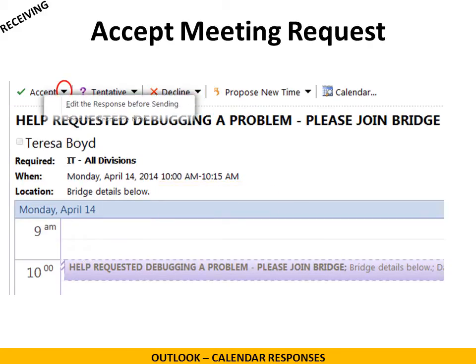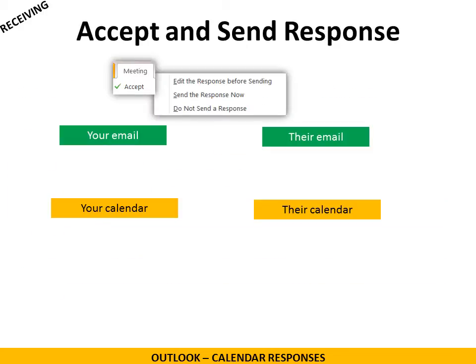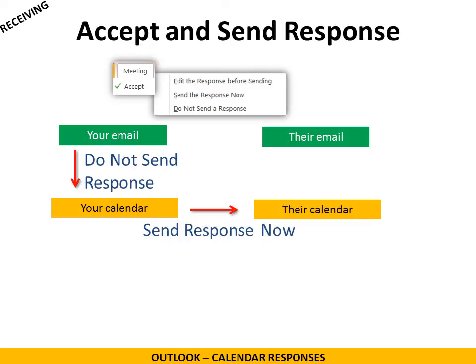We have three options and we want to choose the right one — this is very confusing for a lot of people. In fact, some companies actually turn off the 'do not send a response' option so you cannot use it. If you choose 'do not send a response,' it goes from your email to your calendar — meaning it's accepted in your calendar, but the person who sent the request does not know because it never went to their calendar. If you choose 'send the response now,' it goes from your calendar to their calendar and lets them know. They'll be able to see your tracking and status. So you definitely want to hit 'send the response now' — that is the preferred option.